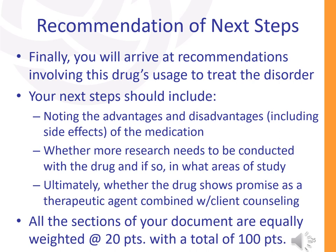In the final section of your signature assignment, you will be arriving at recommendations involving this drug's usage to treat the disorder. Your next steps should include the following: you should note the advantages and disadvantages, including side effects, of using that medication. You should also note whether more research needs to be conducted with the drug, and if so, in what particular areas of study. And ultimately, whether the drug shows promise as a therapeutic agent when combined with client counseling. All five of these sections of your signature assignment are equally weighted at 20 points each, with a total of 100 points.